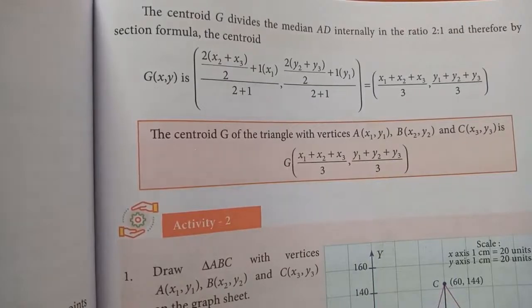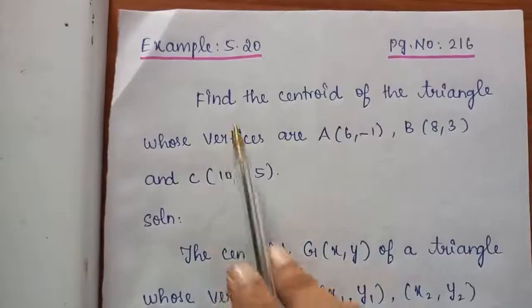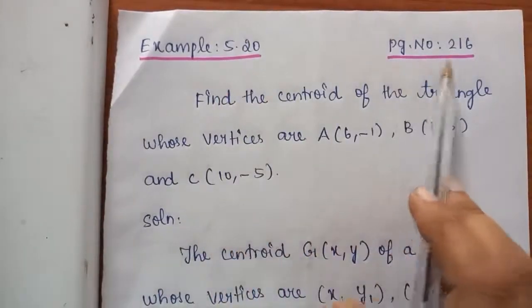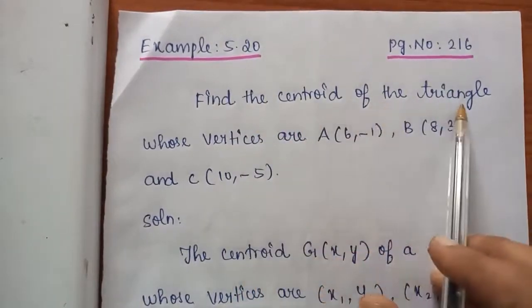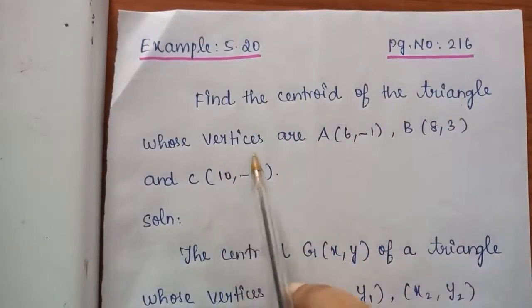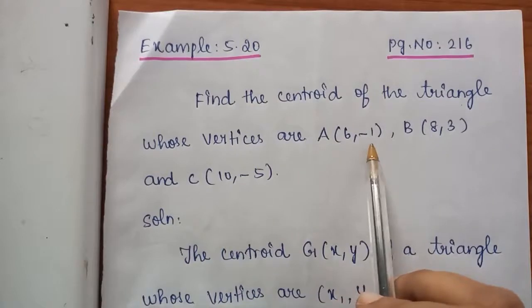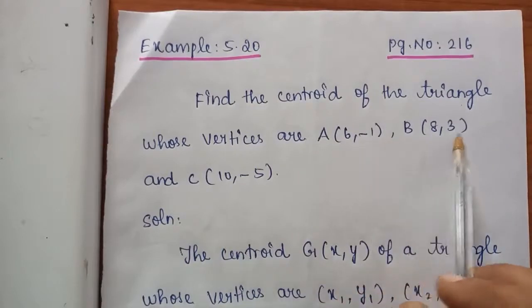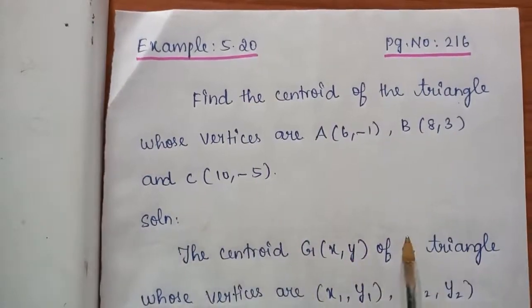This is the formula for the centroid of a triangle. Next we are going to see example problems. Example 5.20, page number 216: Find the centroid of the triangle whose vertices are A(6, -1), B(8, 3) and C(10, -5).